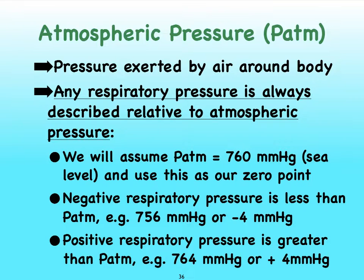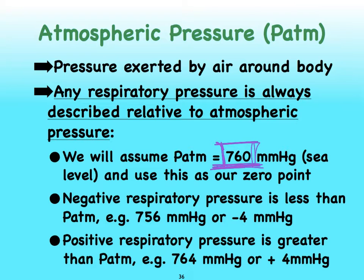In order to simplify our discussion of inhalation and exhalation, we're always going to assume that we're at sea level, despite the fact that we might be living at a much higher elevation — for instance, here in Albuquerque at about 5,000 feet. At sea level, the pressure is going to be 760 millimeters of mercury, so be sure you memorize this number. We'll use that as our zero point, so all other pressures are always going to be in relation to that atmospheric pressure at sea level. If another pressure is higher than 760 mmHg, we say it has a positive pressure; if lower, it has a negative value.